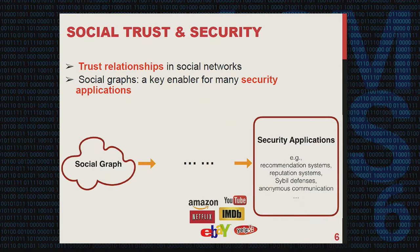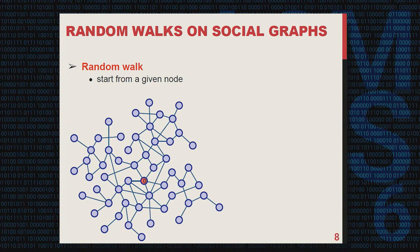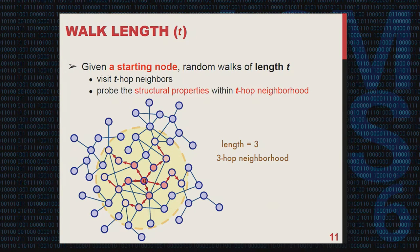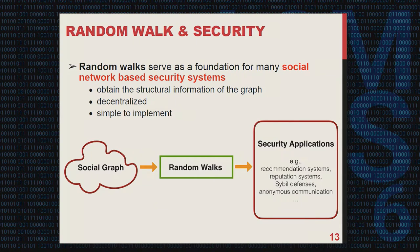Among the design of these applications, a very important approach is to perform random walks on social graphs. A random walk initiated from a starting node will randomly pick one of its links and jump to the next node at each step. A random walk of length T enables us to visit T-hop neighbors and get an understanding of the structural properties within the T-hop neighborhood around the starting node. Since random walks can help gather structural information of the T-hop neighborhood, and are decentralized and simple to implement, they have gained popularity and form a critical foundation for many social network based security systems.